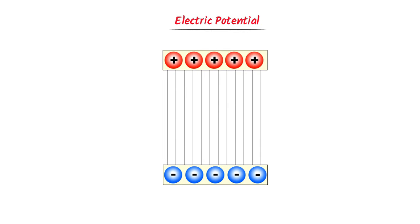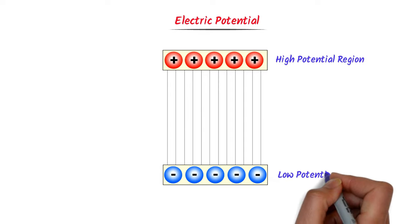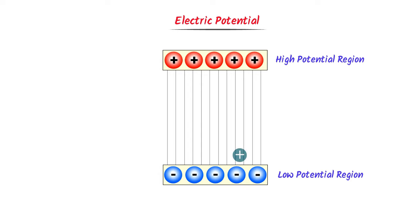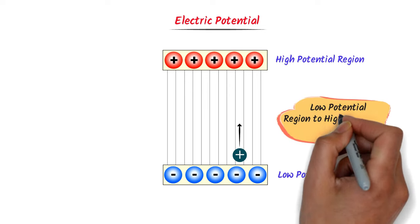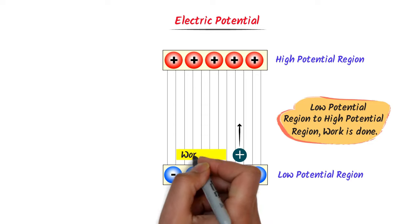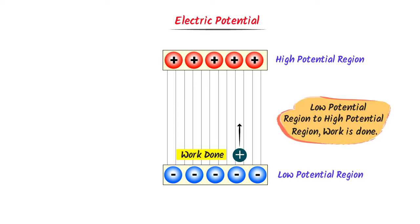Now what is electric potential? Consider the electric field between a positive plate and a negative plate. Remember that the direction of the electric field is also downward. As a convention in physics, we consider the positive plate as a high potential region and the negative plate as a low potential region. Now I place a positive test charge at the low potential region. According to the first fact, if we are interested in moving this charge from low potential region to high potential region, we need to do some sort of work on it.